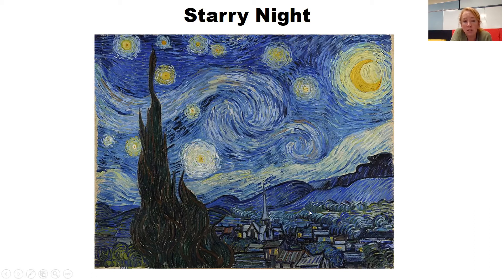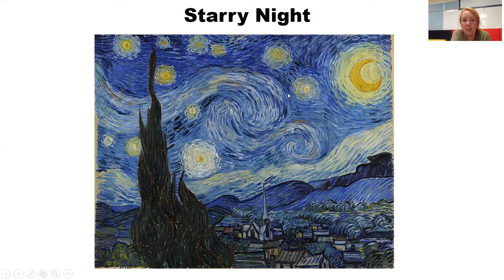Van Gogh used exaggerated marks to create his portrait, making this style impressionism. Many of you are familiar with his painting Starry Night. Notice that he used exaggerated lines and marks and also created a landscape showing multiple steps building up his picture. We have the ground area with houses at the bottom, then trees and foliage, then a hill, mountains behind, and then the sky. We talked about how this line here is the horizon line, which defines where the sky stops and the ground begins.